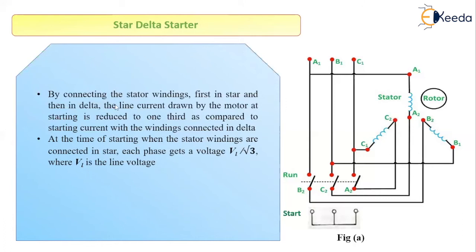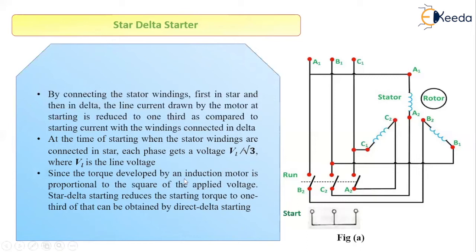When the stator windings are connected in star at starting, we know that V_phase equals V_L divided by root 3, where V_L is the line voltage. So each phase will get a reduced voltage that is 1 by root 3 times the actual line voltage. Also, the torque developed in the induction motor is directly proportional to the square of the applied voltage. So as the reduced voltage is applied, the starting torque will also be reduced to one third of what would be obtained by direct delta starting. So our current will be reduced by one third, and our starting torque will also be reduced by one third.